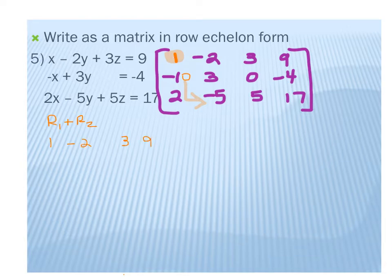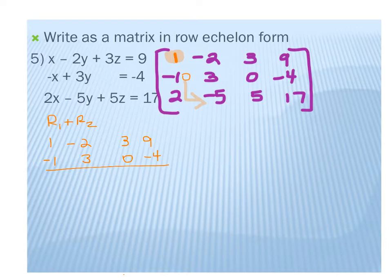I cannot stress this enough — I know you're super smart, but take the time to write it out. One, for homework you can go back and figure out where you went wrong. Two, when I grade your test and you miss a step, it's the only way I'll know where things went wrong. So writing row 1 plus row 2 gives us 0, 1, 3, and 5 in row 2. Row 1 is already the way I want it, so I replace row 2.